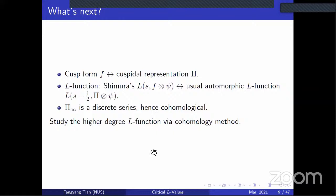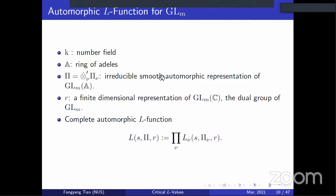When we have a cusp form of GL_2 it generates a cuspidal representation capital Pi. The L-function in Shimura's terms, L(s, f tensor psi), corresponds in our notation to the automorphic L-function L(s - 1/2, Pi tensor psi) — this is a shift of s. This is a twisted standard L-function for GL_2. Because we are doing a holomorphic cusp form, pi_infinity is a discrete series, hence cohomological. Our goal is to study the analogue of these results for higher degree L-functions by a cohomological method.